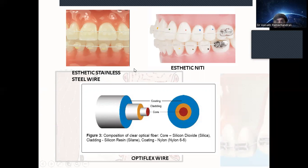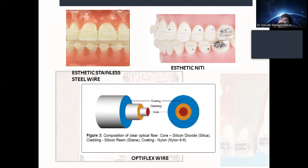However, aesthetic wires are very expensive. Examples include aesthetic stainless steel wire with a tooth-colored coating, and aesthetic NiTi wire which also has a coating. Another wire is the Optiflex wire, which consists of three layers: a central core made of silicon dioxide, a surrounding cylindrical layer, and an outer nylon layer. This is one of the most recent aesthetic wires available.